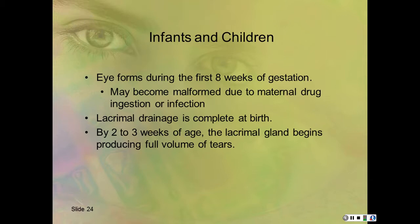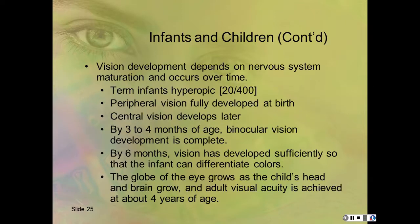Infants and children's eyes form during the first eight weeks of gestation and can become malformed due to maternal drug ingestion or infection. Lacrimal drainage is complete at birth. By two to three weeks of age, the lacrimal gland begins producing full volume of tears. Term infants have vision of about 20/400, and it takes until they're about five to six years old to have 20/20 vision.